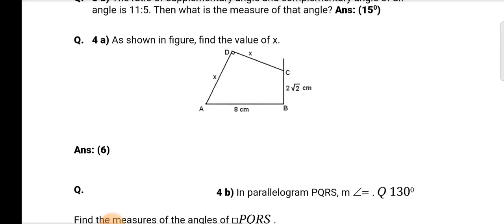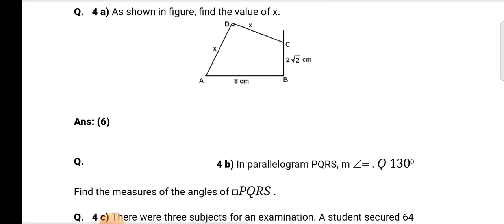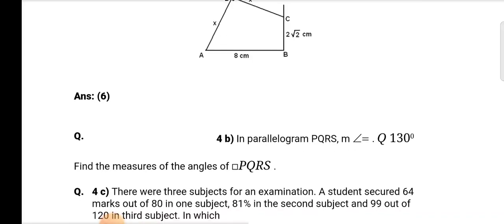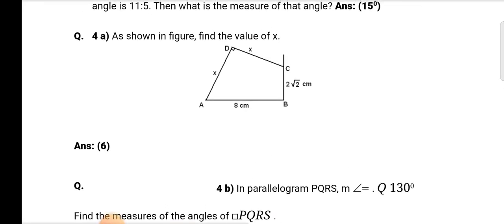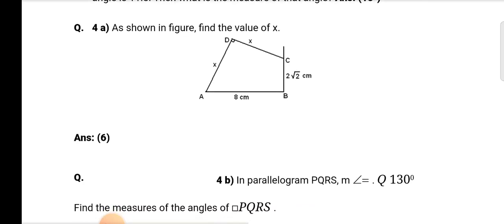Question number 4a: As shown in the figure, find the value of x. In figure ABCD is a quadrilateral, AD and DC are equal length x, angle ADC is 90 degrees, AB is 8 cm and BC is 2 into root 2 cm. Find value of x. Join AC to find value of x. First we draw AC or joint AC. Answer is 6.